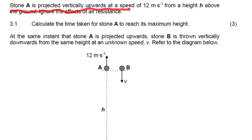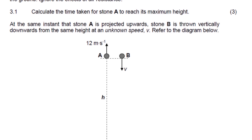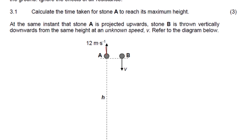Stone A is projected vertically upwards at a speed of 12 meters per second. If you look at this diagram here, stone A is projected upwards at a speed of 12 meters per second from a height H. We're not given the height, so this height is H, above the ground — neglect the effect of air resistance. What's going to happen to A? It's going to go up, reach the maximum height, and then come back down.